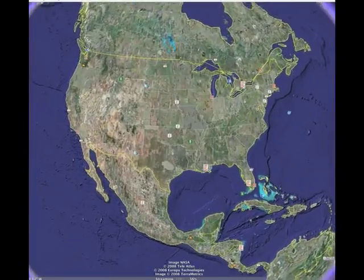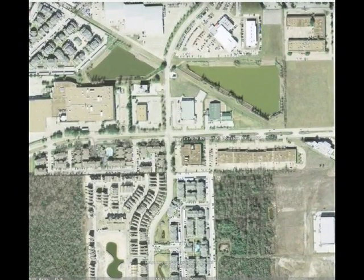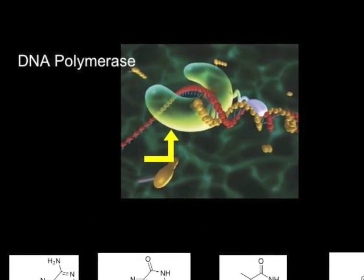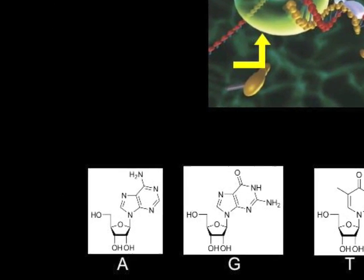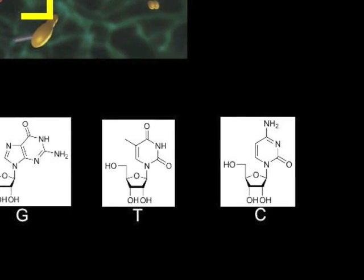A second technology, which currently shows the most potential, is being developed by Visigen Biotechnologies Incorporated, a company based in Houston, Texas. Their technology takes advantage of factors involved in DNA replication by engineering DNA polymerases, the enzyme that adds together the base pairs, and nucleoside triphosphates, the molecules which give identity to the base pairs.